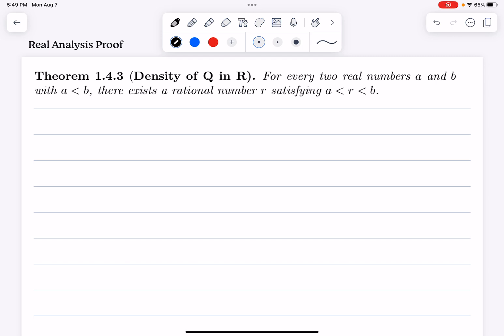So the statement goes like this: For every two real numbers A and B with A less than B, there exists a rational number R satisfying R between the open interval A through B. Recall that the rational number is simply just a quotient of two integers, where M and N in the integers.